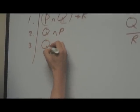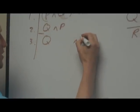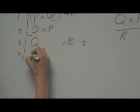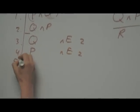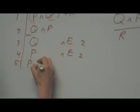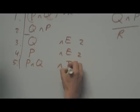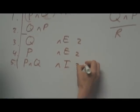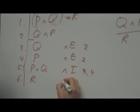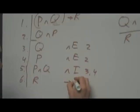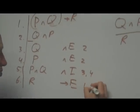So first I need to get Q by ant elimination on number two, then I got P by ant elimination from two, then I got P and Q. I put them back together by ant introduction from three and four, and then I can finally get R by modus ponens, so what's called conditional elimination on one and five.